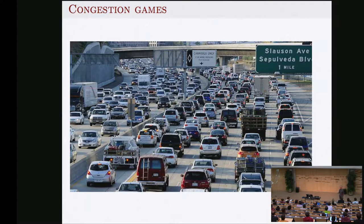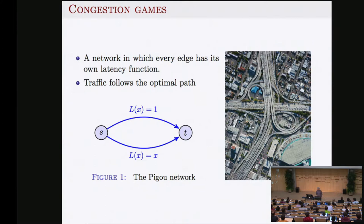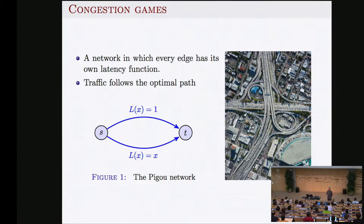Price of anarchy has to do with how much we as a society suffer because of the selfishness and rationality of individuals. You see what happens here — this is a Los Angeles highway. You see a mechanism: this lane here is a carpool lane, a mechanism that tries to alleviate the problem created by the selfishness of drivers. Let's model it. Here is what I want to discuss: congestion games. A congestion game is defined by a network, and edges have latency functions.